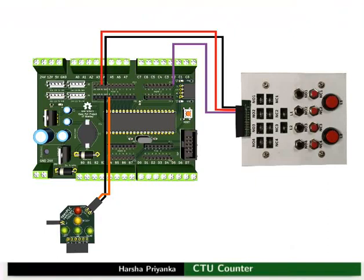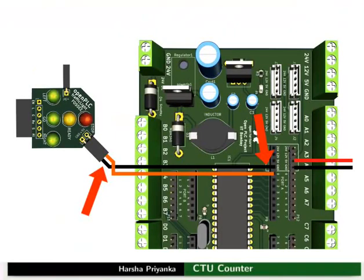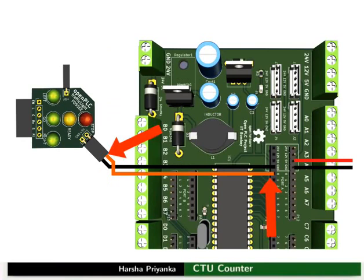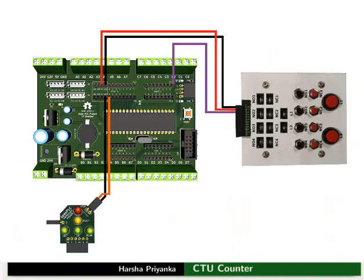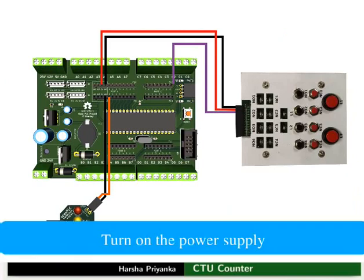Let us see the connection details. Connect the GND pin of the red LED of the traffic light module to GND of the mainboard. Then connect the +5V pin of the red LED to PA0 pin of the mainboard. Connect GND and 5V of the switchboard to GND and 5V of the mainboard respectively. Then connect NO1 of the switchboard to PC0 of the mainboard. Make the connections as shown in the picture.